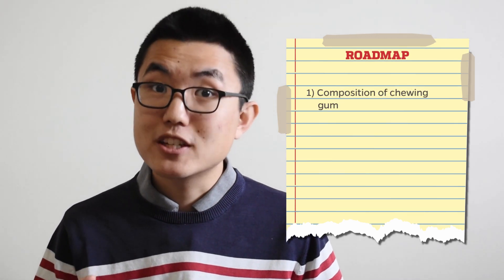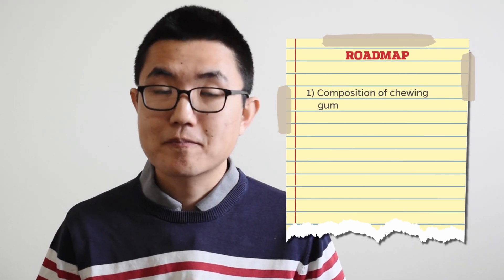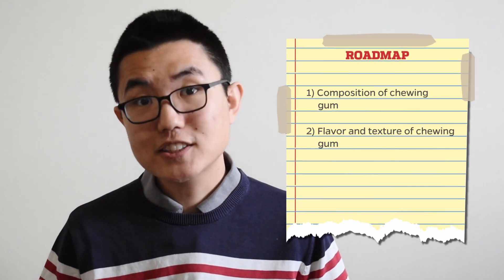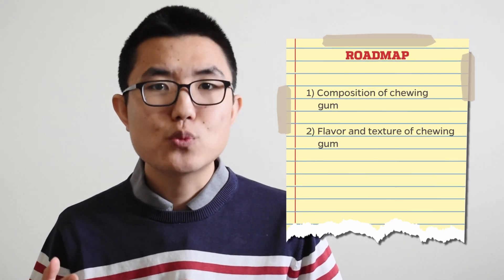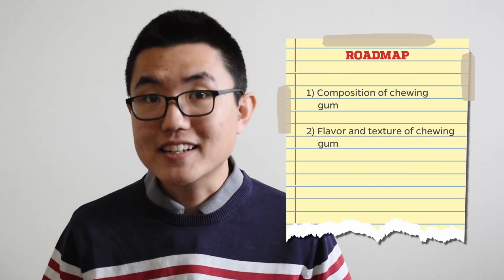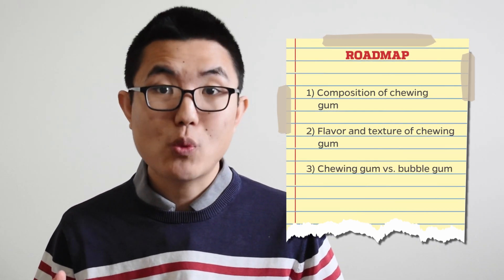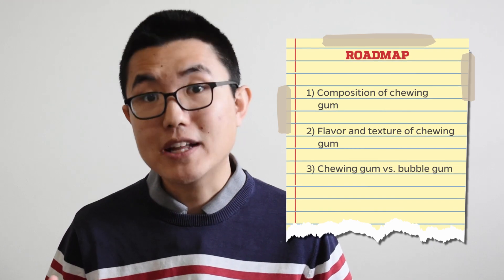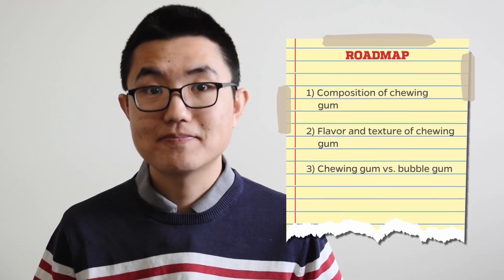To answer those questions, we'll split this video up into three parts. First, we'll discover the composition of chewing gum. Then we'll discuss the flavor and texture of gum, and why those properties change as you chew. Finally, we'll discuss why you can blow bubbles with some types of gum and not with others.